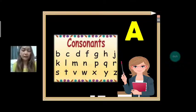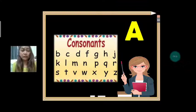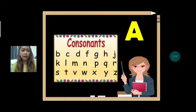How about A? We use A if the vocabulary word starts with a consonant. What are consonants? Consonants are B, C, D, F, G, H, J, K, L, M, N, P, Q, R, S, T, W, X, Y, and Z. If the vocabulary word starts with these letters, we use A.